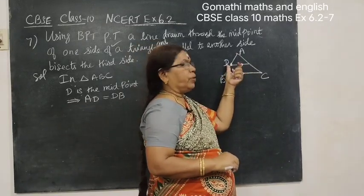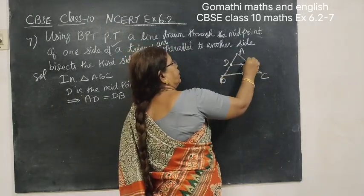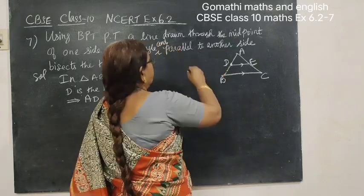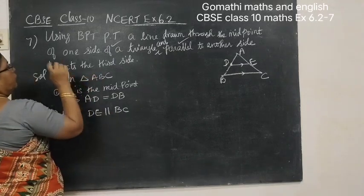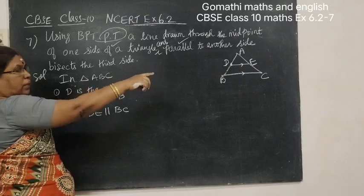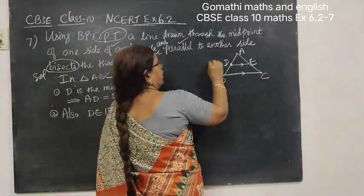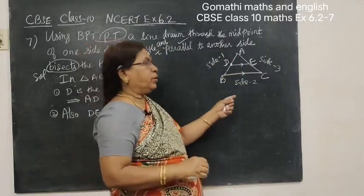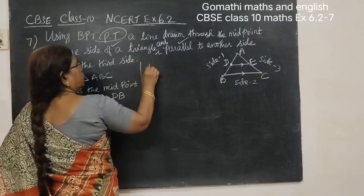Obviously when you draw from D, let it intersect AC at E. So DE is parallel to BC — it is given parallel to another side. We have to prove that line DE bisects the third side, that is, E is the midpoint of AC.